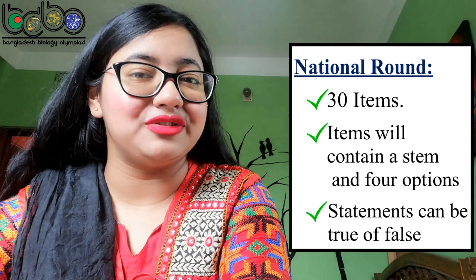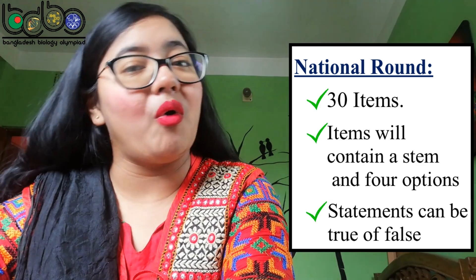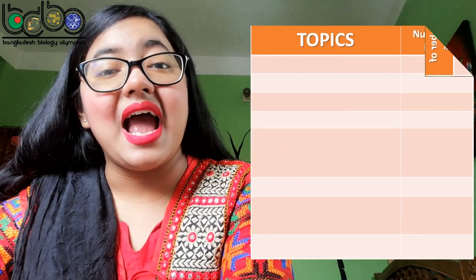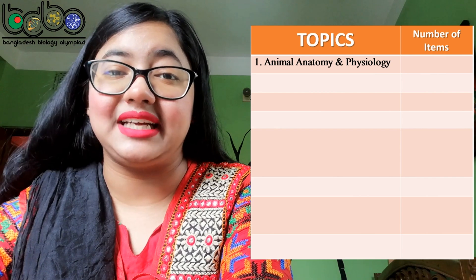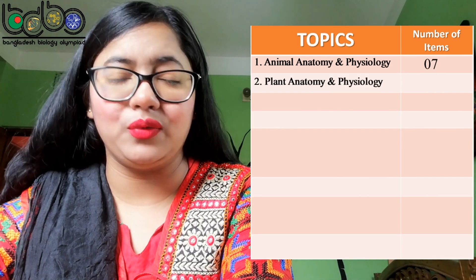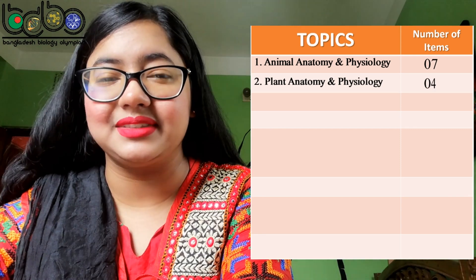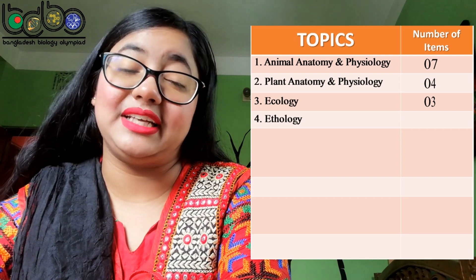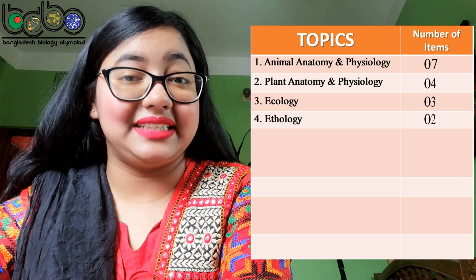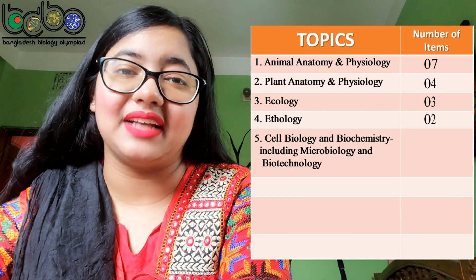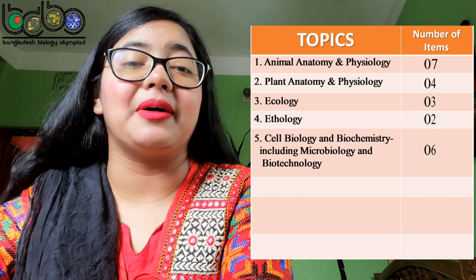You have to identify whether each statement is true or false. The topics of the national set will be: animal anatomy and physiology, which will contain seven items; plant anatomy and physiology, which will contain about four items; ecology, which will contain three items; and ethology, which will contain two items.